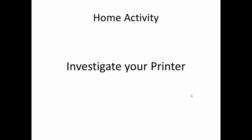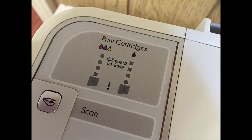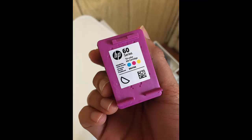Here is a home activity. With the help of an adult, investigate your printer. You will find cyan, yellow and magenta printed on the outside. And with the help of an adult, if you carefully remove the cartridge, you will find cyan, yellow and magenta printed on it as well.